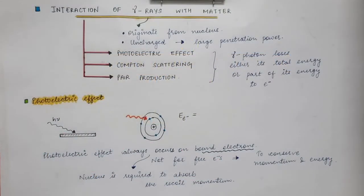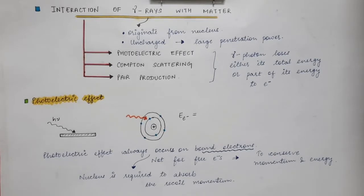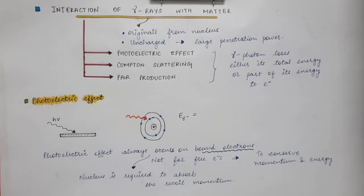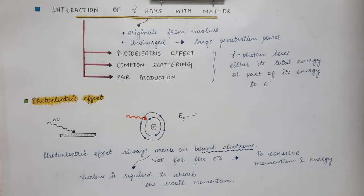In this lecture we are going to discuss about the interaction of gamma rays with matter. In the previous lectures we have discussed about the interaction of heavy charged particles and light charged particles with matter. There we saw that the two main processes by which the energy is lost in the case of heavy charged particles is the collisional loss, and in the case of light charged particles it is both the collisional loss as well as the radiation loss. Now we are going to talk about gamma radiations.